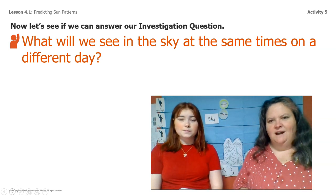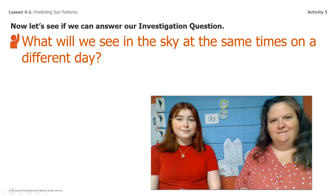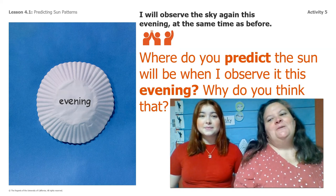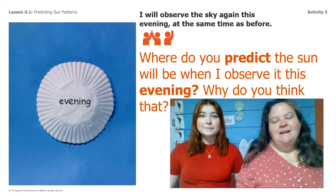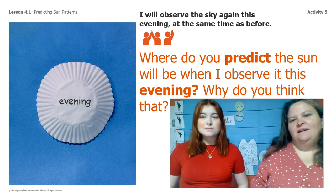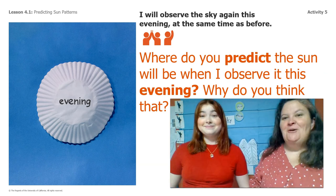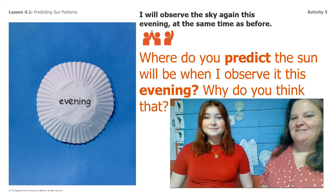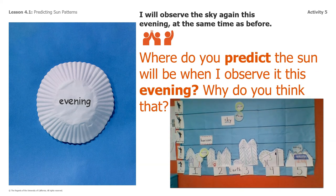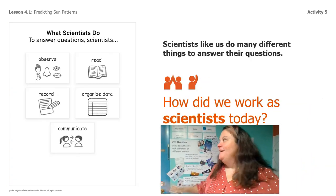We have one more prediction to make. Tonight I'm going to go back outside at the same time as I made my last evening observation and observe the sun. Where do you predict the sun will be when I observe it this evening, and why do you think that? Go ahead and point to the screen and make sure you tell me why you made that choice.